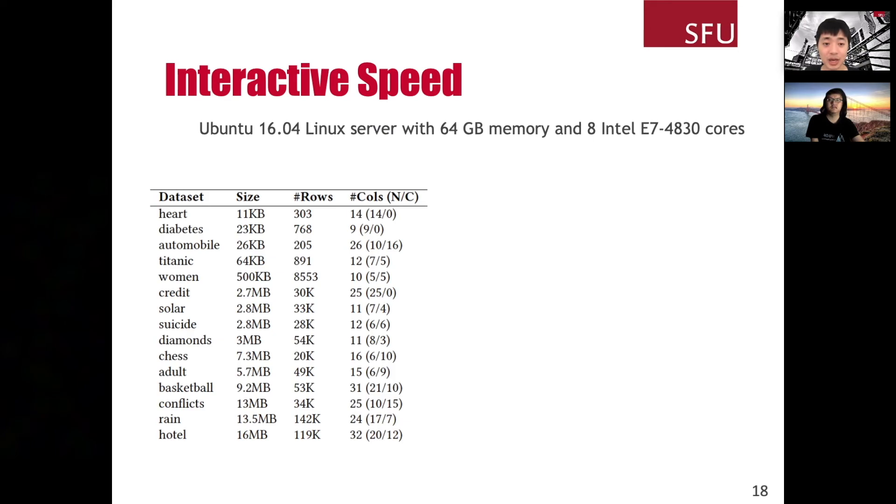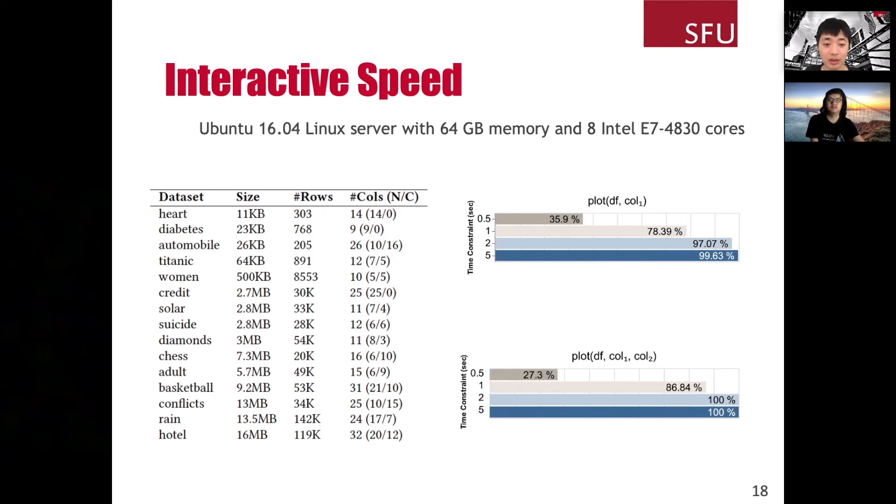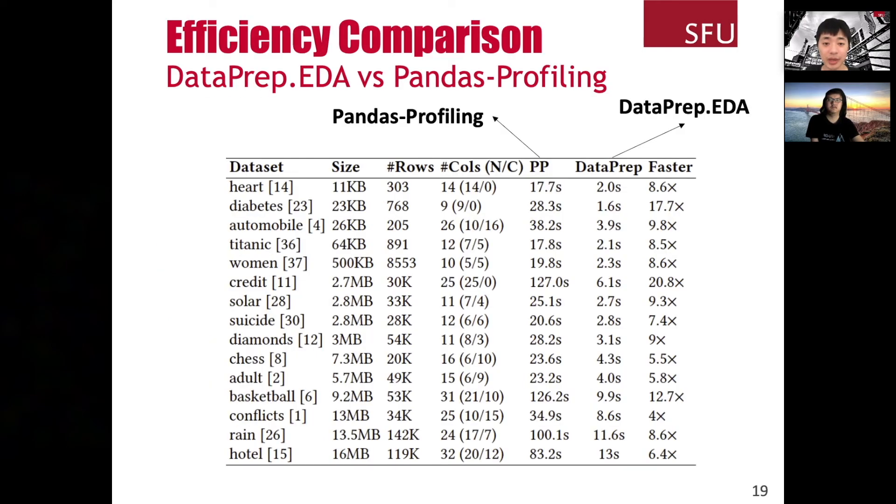Given these optimizations, our library can achieve interactive speed on different EDA tasks. In this experiment, we used 15 commonly used public datasets and enumerated all the possible column combinations to call the plot function. For plot_df with a single column, 97% of the tasks can be finished within 2 seconds, and 99.6% of the tasks can be finished within 5 seconds. For plot_df with two columns, all the tasks can be finished within 2 seconds. We also compared the efficiency of our library with Pandas Profiling on the report creating function. Again, our library is up to 20 times faster than Pandas Profiling.